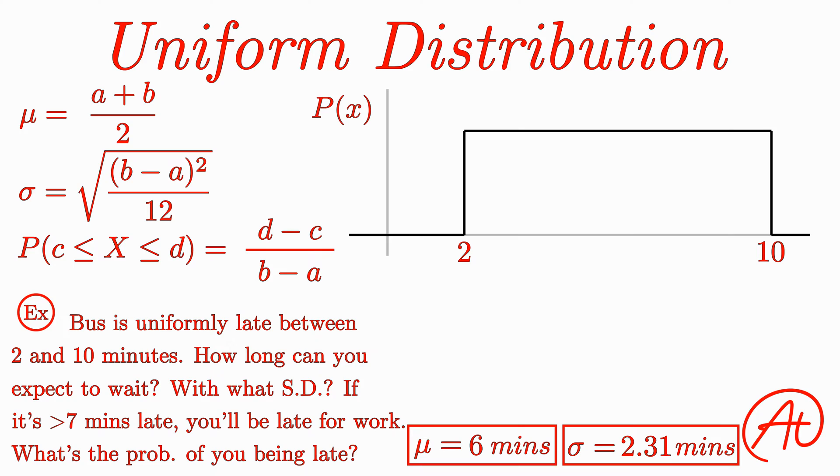Finally, in order to calculate the probability of being late to work, we essentially want to find the probability of the bus being over 7 minutes late. Since the bus's arrival time has an upper bound of 10 minutes late, we need to find the probability of it being between 7 and 10 minutes. Using our probability formula, we find that this probability ends up being 3 over 8 or 0.375.